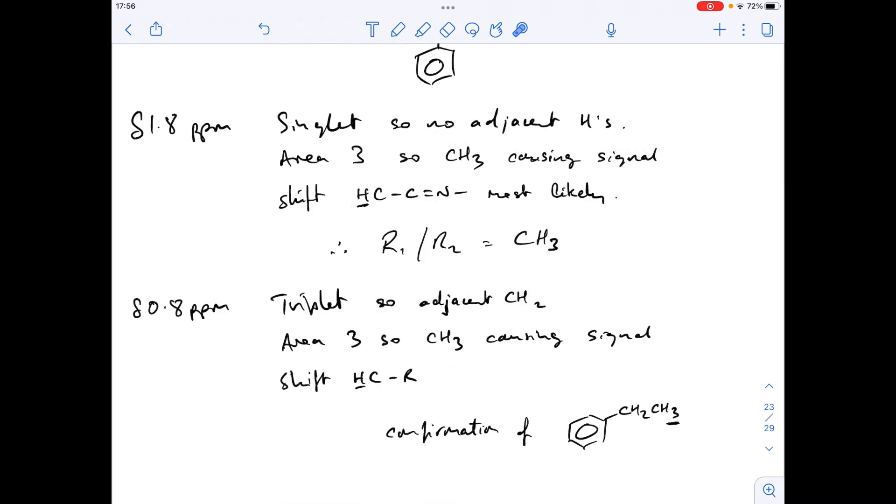Okay, so we now know that the R groups are a CH3 group and this ethyl benzene group. Obviously, there's an attachment somewhere here to the main part of the molecule. So we're going to use the carbon-13 NMR to see how we attach this to the rest of the molecule.